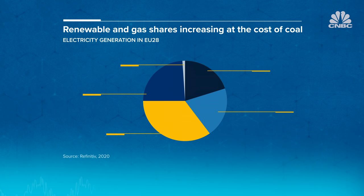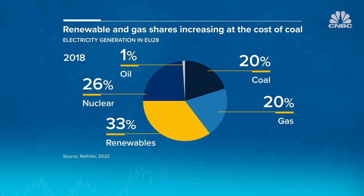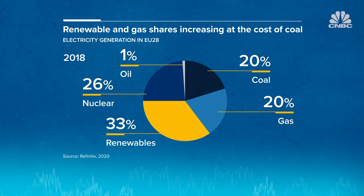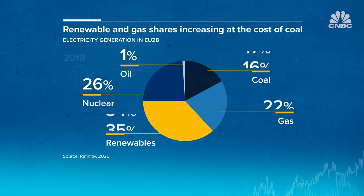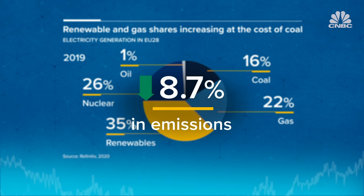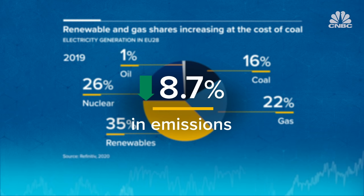In turn, the energy sector moved output away from coal-power stations to cleaner natural gas-powered electricity production that produces less CO2. In 2019, emissions fell by 8.7%, the largest decline since 2009.